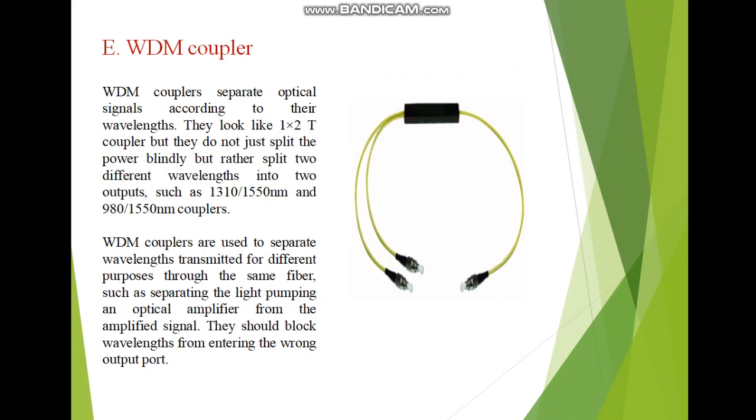Next coupler is my WDM coupler - wavelength division multiplex coupler. WDM couplers separate optical signals according to their wavelengths. They look like 1x2 T coupler, but they do not just split the power blindly, but rather split two different wavelengths into two outputs. The wavelengths are mentioned as 1310/1550 nanometers or the second combination is 980/1550 nanometer couplers. WDM couplers are used to separate wavelengths transmitted for different purposes through the same fibers, such as separating the light pumping an optical amplifier from the amplified signal. They should block wavelengths from entering the wrong output port.